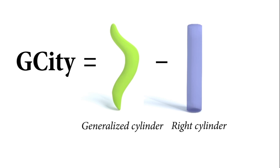The core of our decomposition method is a novel quantitative measure of a shape part, referred to as Generalized Cylindricity, or G-City for short. It measures how much a shape part departs from a perfect right cylinder.